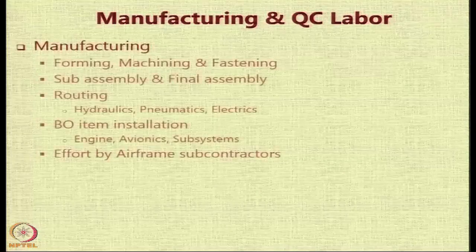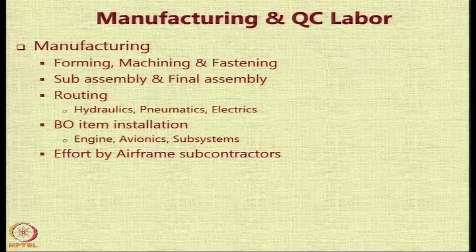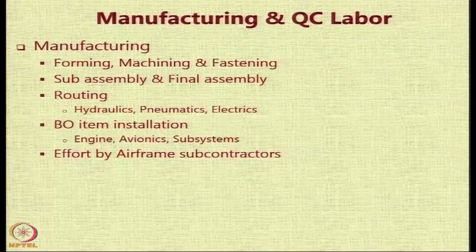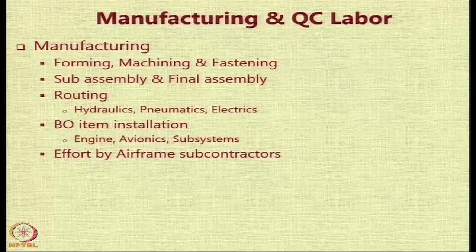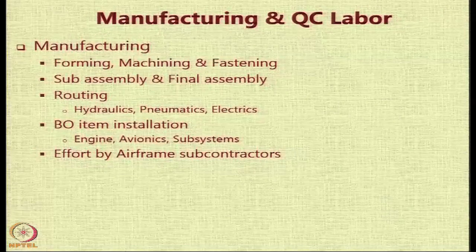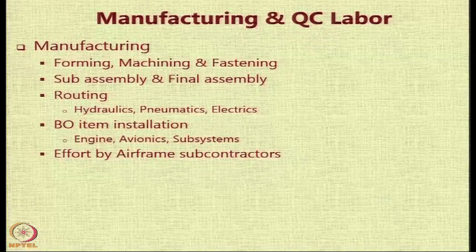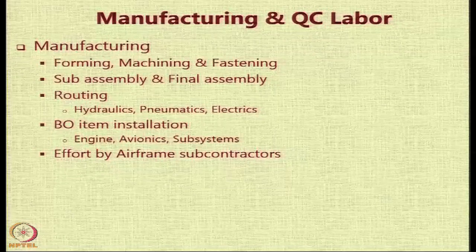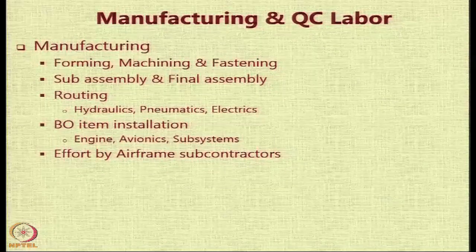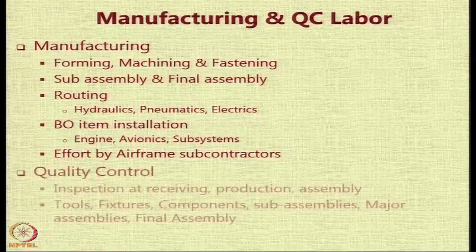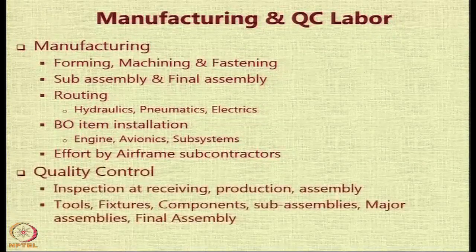The next is manufacturing and quality control labor. Manufacturing involves forming, machining, and fastening. It involves making sub-assemblies and assembling them, routing of hydraulics, pneumatics, and electronics, and installation of purchased items like the engine and avionics subsystems. Airframe subcontractors also work with the engineers of the manufacturing organization — all of them together constitute the manufacturing.